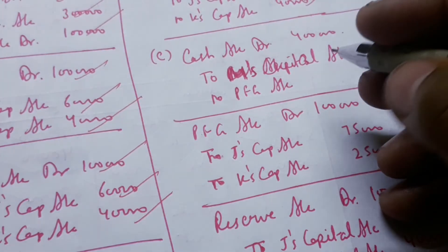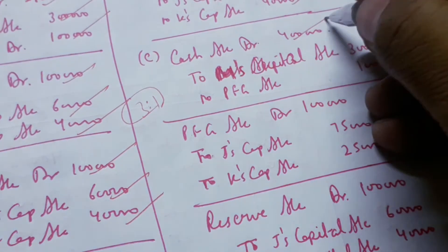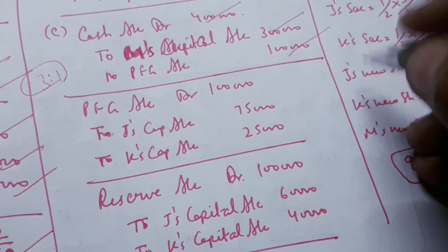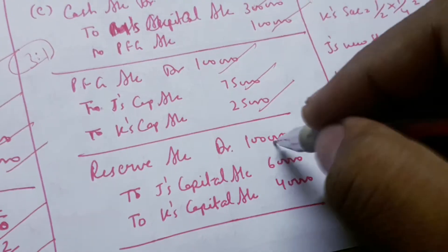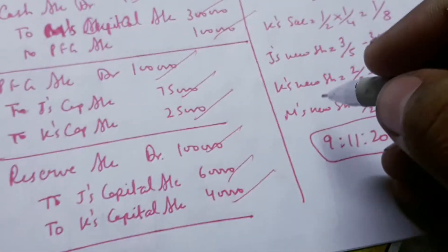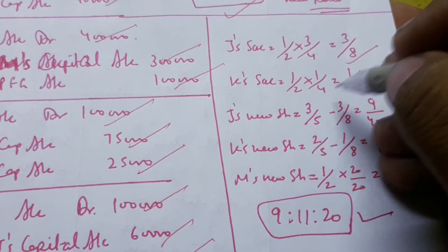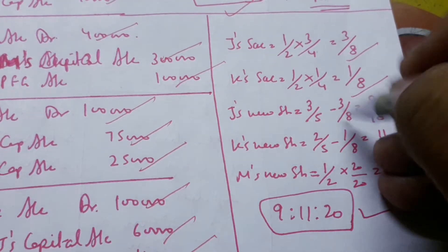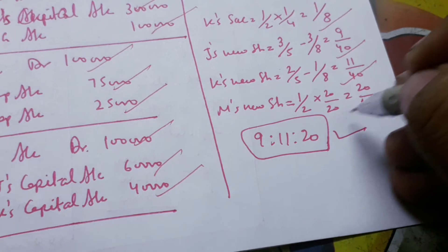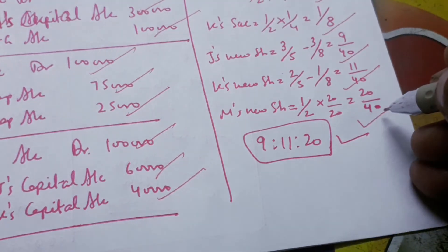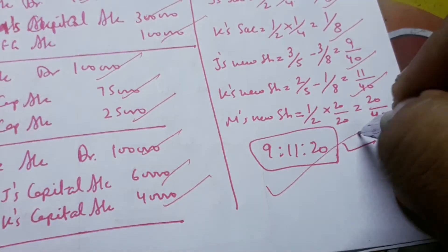In Part C, M acquires his share from J and K in a 3:1 ratio. Capital and premium entries remain the same: cash to M's capital and premium. Premium is divided 3:1 ratio and reserve in old ratio. J's sacrifice is half of 3/4 = 3/8. K's sacrifice is half of 1/4 = 1/8. New shares: J gets 9/40, K gets 11/40, and M gets 20/40. New ratio is 9:11:20.